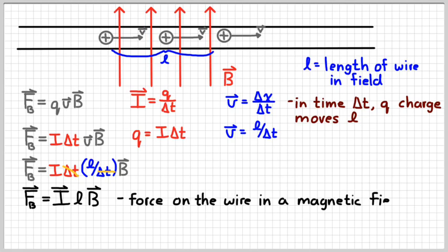And so that's how I would find the force on the wire in the magnetic field. Now the wire outside the magnetic field would not feel a force. And so this just tells us the force on the length of wire L that is in the magnetic field.